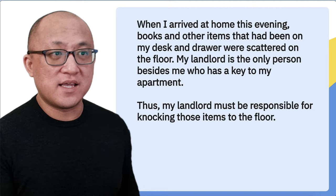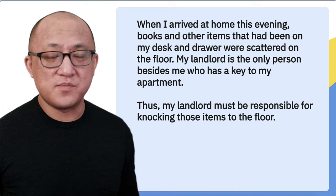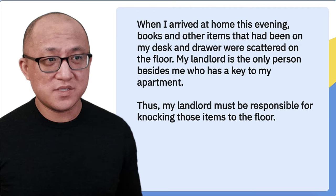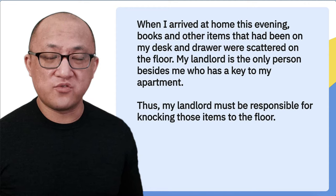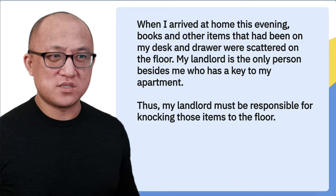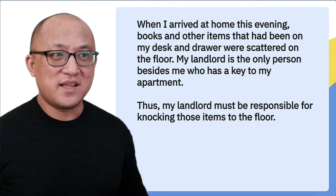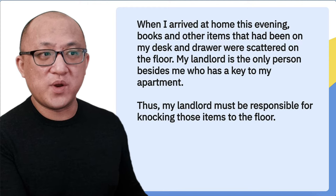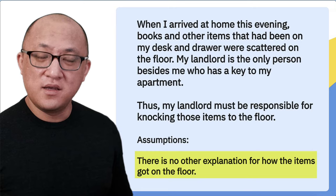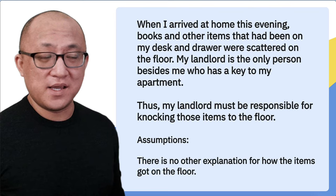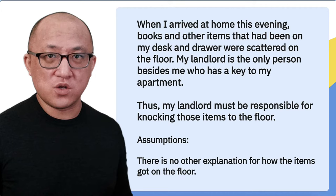The first example argument: 'When I arrived home this evening, books and other items that had been on my desk and in my drawer were scattered on the floor. My landlord is the only person besides me who has a key to my apartment. Therefore, my landlord must be responsible for knocking those items to the floor.' This argument seems to be assuming that the landlord was the cause of the items being on the floor — that because he was the only person who had access, it must be him. One way to phrase that assumption is: there is no other explanation for how the items got on the floor.